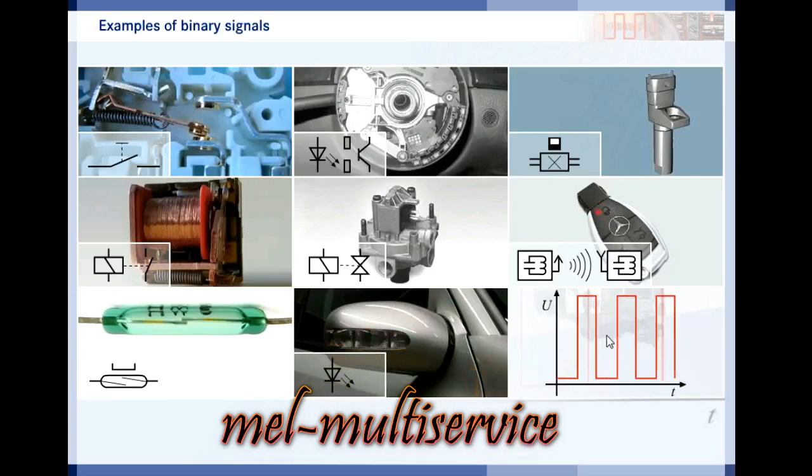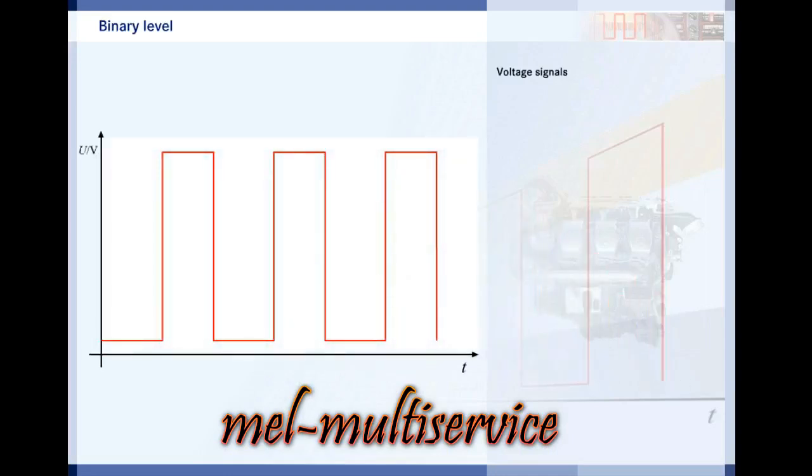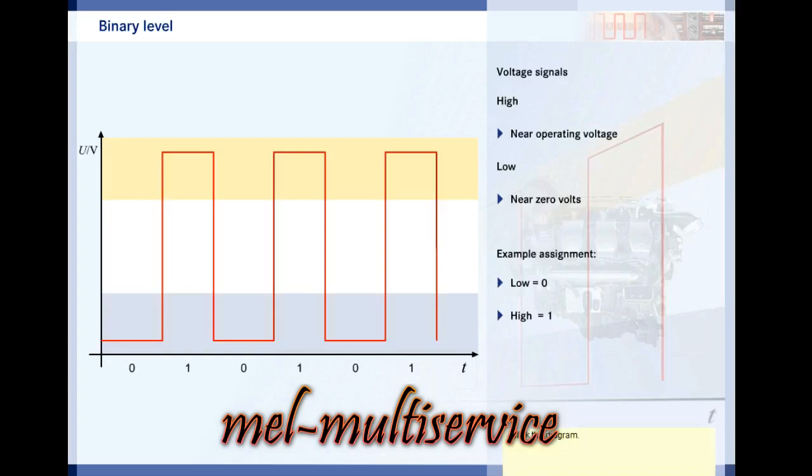If the sequence of binary states is recorded, it is called a binary signal. This section shows how binary states are turned into digital signals. Binary signals are often voltage signals. A voltage approaching the operating voltage is called the high level. A voltage approaching zero volts is called the low level. These binary states can be assigned binary numbers. For example, low equals zero, high equals one. Thus, a binary signal looks like a series of digits. Click the diagram to replace it with a real one recorded on the CAN bus.